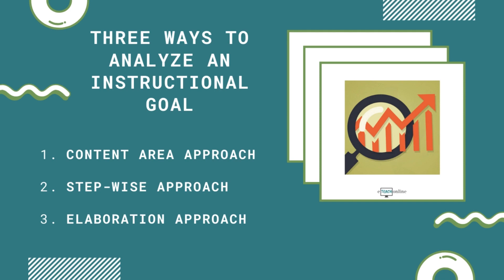There are three ways to analyze your goal. After defining and classifying your instructional goal, your next task is to analyze it and depict either the major steps necessary to achieve or perform the goal, or simple to complex examples of goal performance. These steps may then be used to determine the nature, number, and sequence of instructional units, lessons, or modules in an e-learning course. The three fundamental ways to analyze an instructional goal are: a topic or content area approach, a stepwise approach, and an elaboration approach.